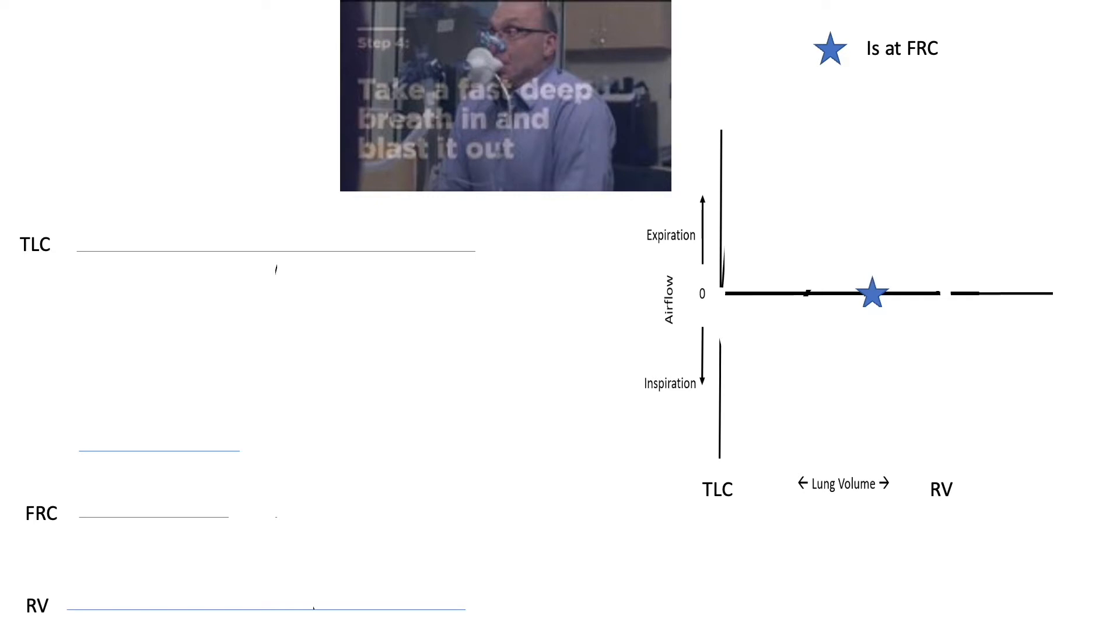On the left-hand side of the screen, you'll see a synchronous display of the volumes being breathed with the x-axis representing time. On the right-hand side of the screen, you'll see the flow volume loops with the star representing FRC, or functional residual capacity.